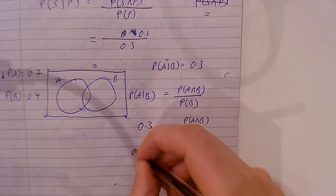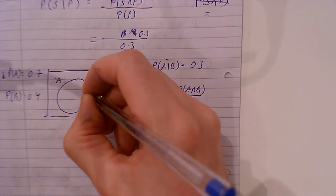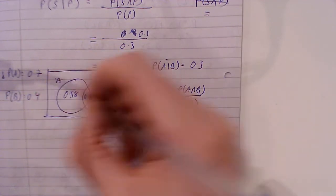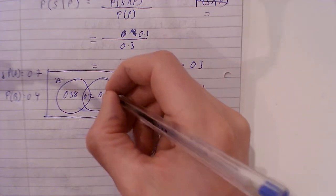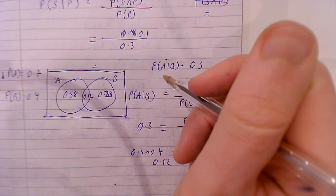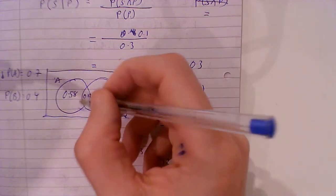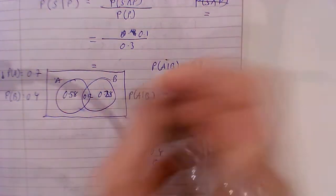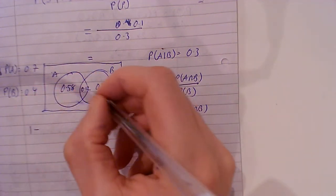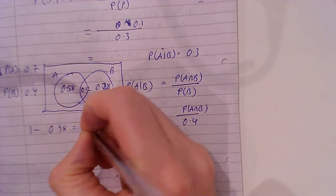So that's 0.12. Take that away from 0.7, that's 0.58. Take that away from 0.4, that's 0.28, and we've got it there. All of that will add up. What's the probability outside here? Well, that's going to be 1 minus all of them, so that's 0.02, and there's your answer.